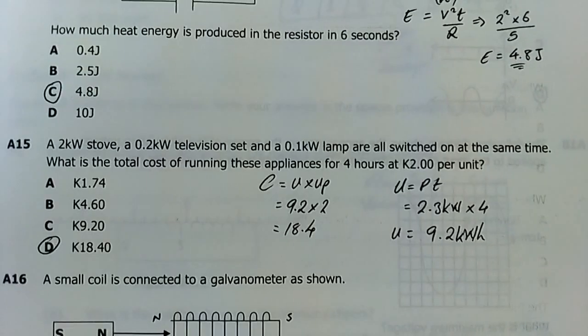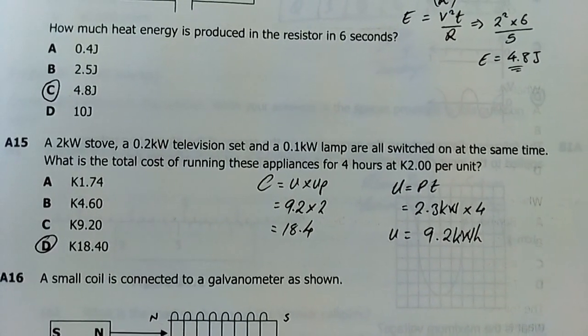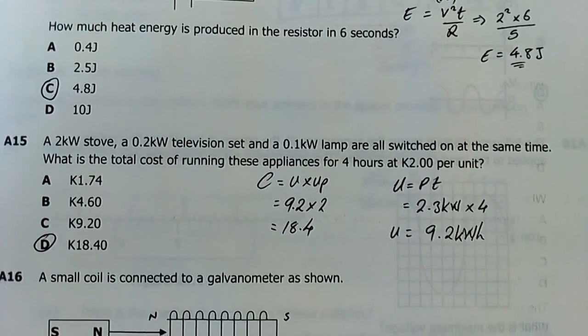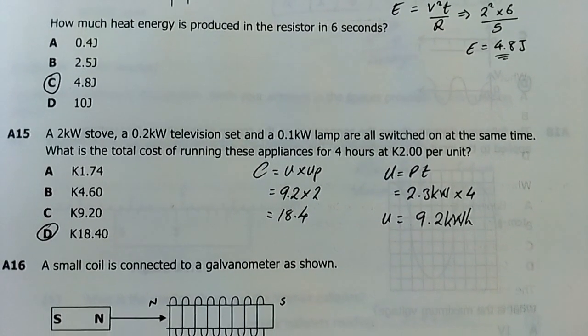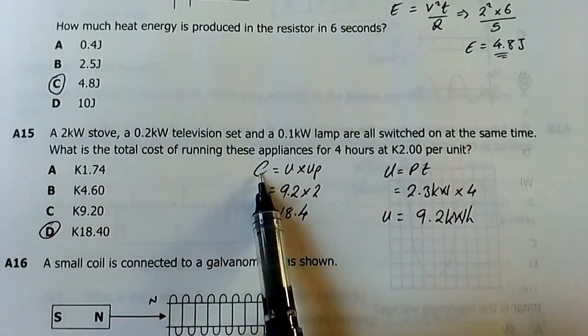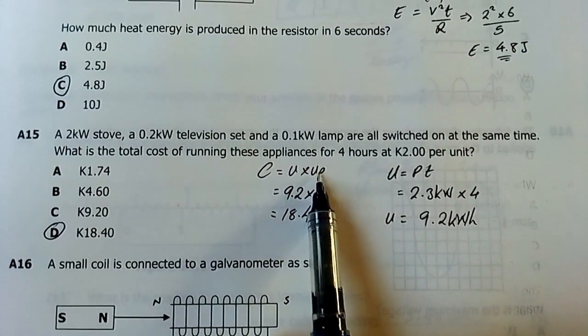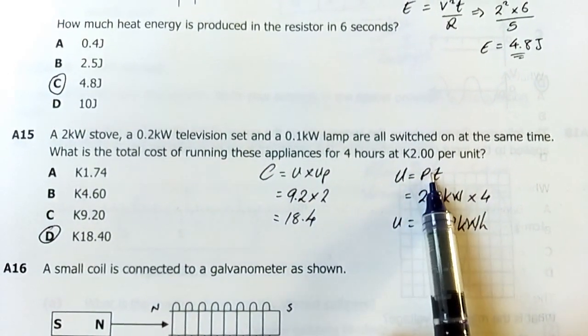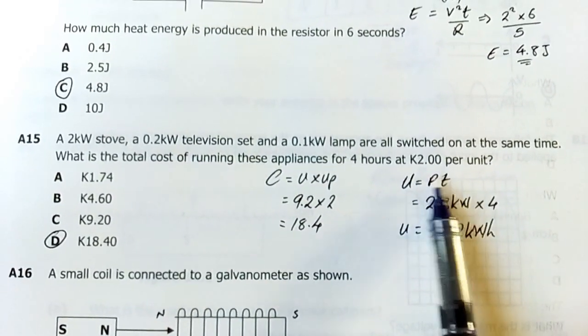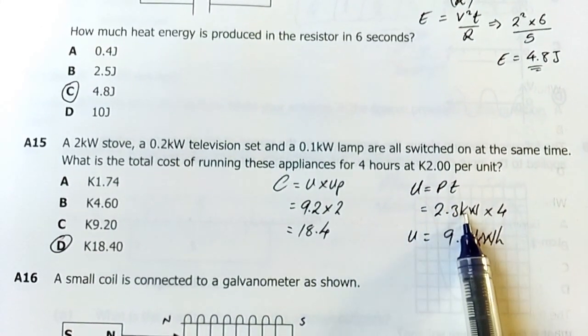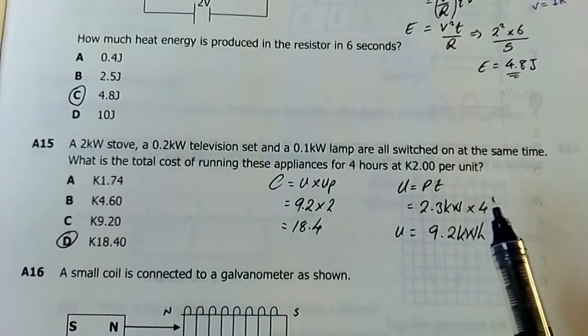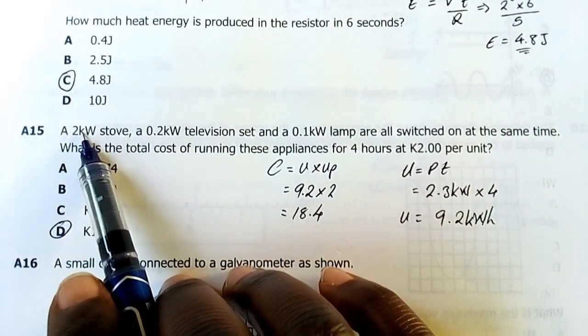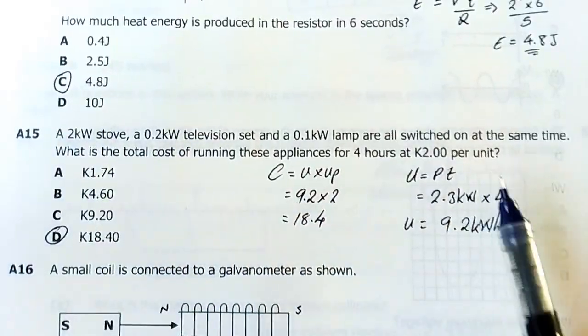Number 15: A 2 kilowatt stove, 0.2 kilowatt television and 0.1 kilowatt lamp are all switched on at the same time. What is the total cost of running these appliances for four hours at two kwacha per unit? The formula is cost equals units times unit price. I need to find the number of units here. Units equals power times time. This is energy. Power in kilowatts because we're talking about cost. Leave these as kilowatts - this is 2000 watts but leave it as two kilowatts. You add all these powers to give you 2.3 kilowatts which is the total power.